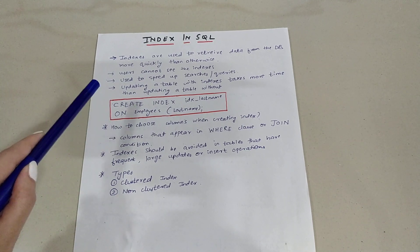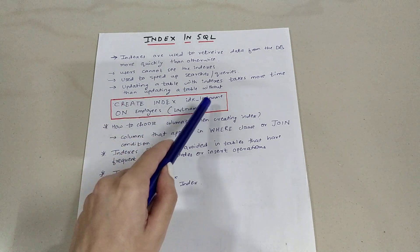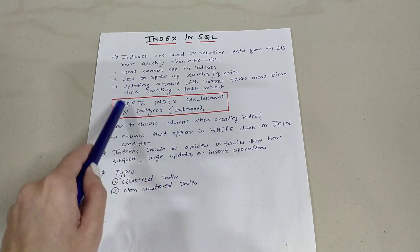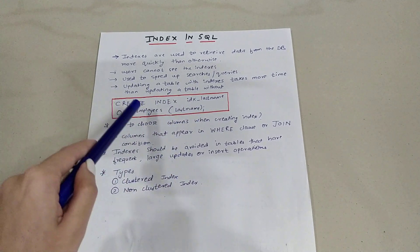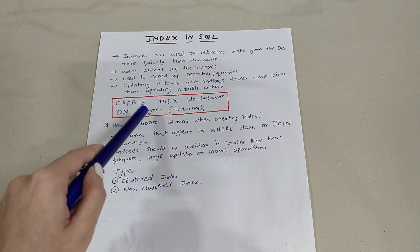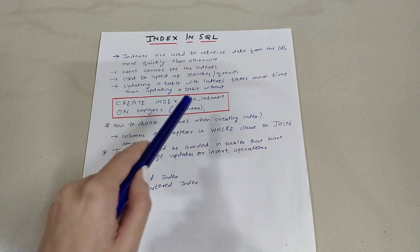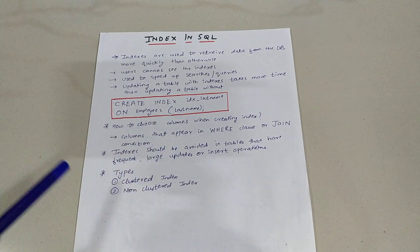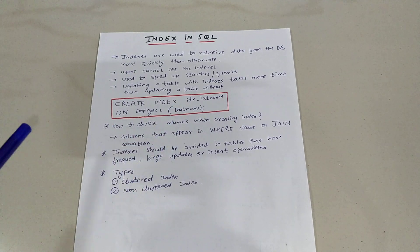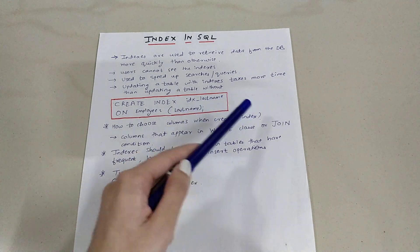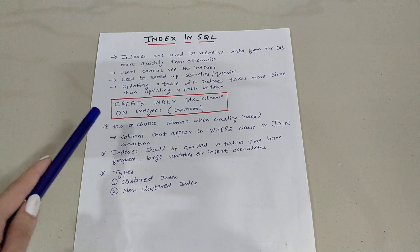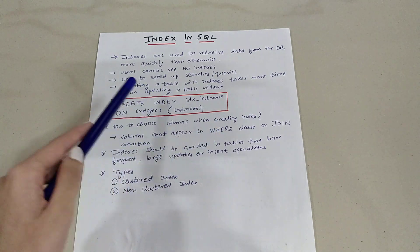This is the syntax for creating an index: CREATE INDEX IDX_lastname — this is the index name, you can give it any name. Then ON followed by the table name, in this case the employees table. In brackets you write the column name, in this case last_name. You can also have more than one column name when you create an index, for example last_name comma another column name.